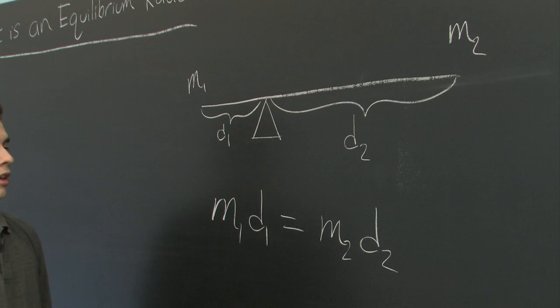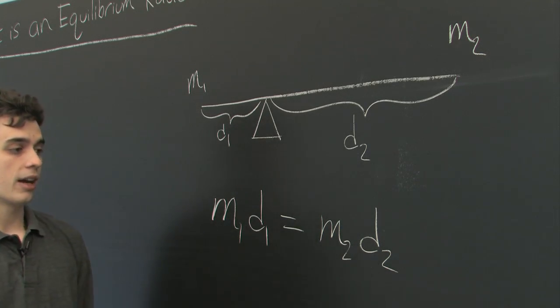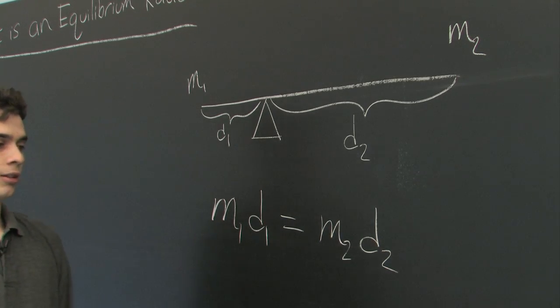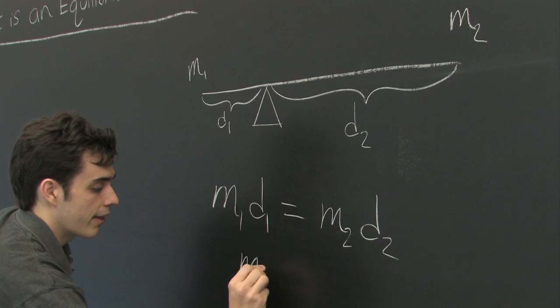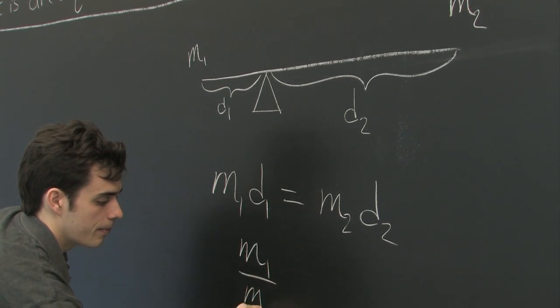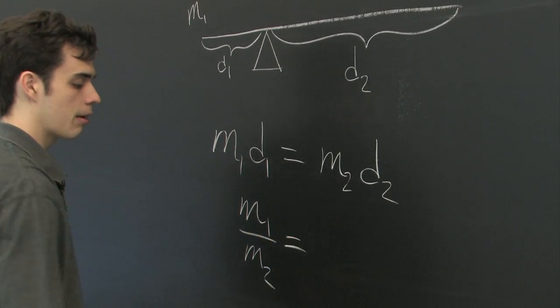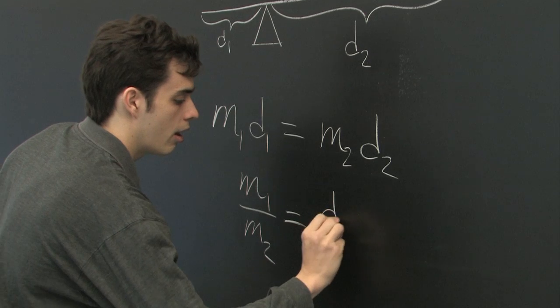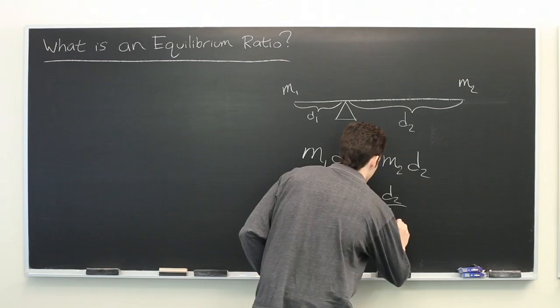Now, if we divide by D1 on both sides and divide by M2 on both sides, we get that the ratio of the masses must be the reciprocal of the ratio of the distances.